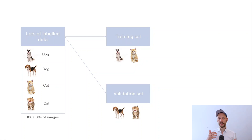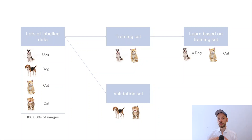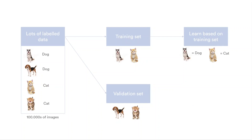You take this training set and based on it, you train your model. You do this by showing it an image of a dog and saying this is a dog, and here's an image of a cat, this is a cat — and you do this for every single image in your database, for many many images, until the model learns how a dog and how a cat looks like, so it can detect this for new images it will see in the future. This is exactly what you do with your validation set.